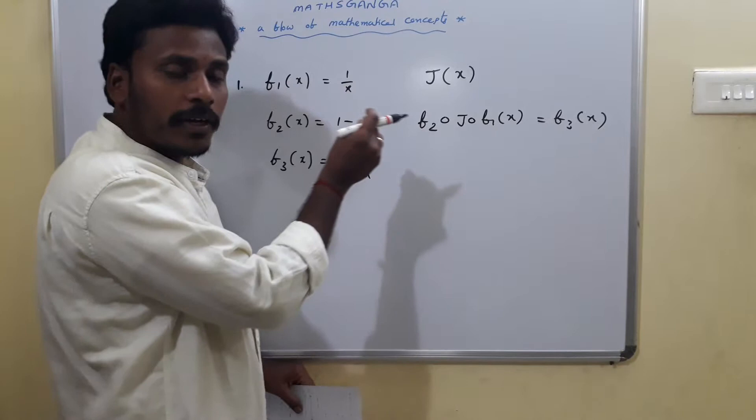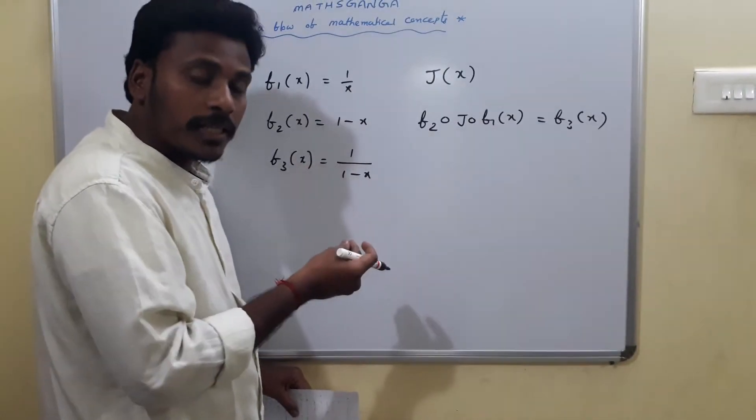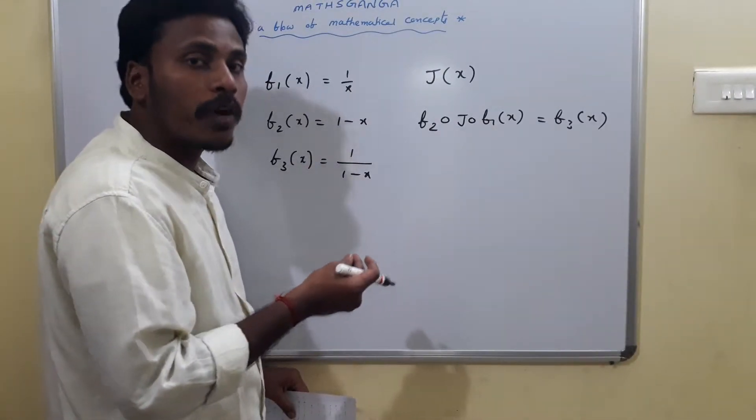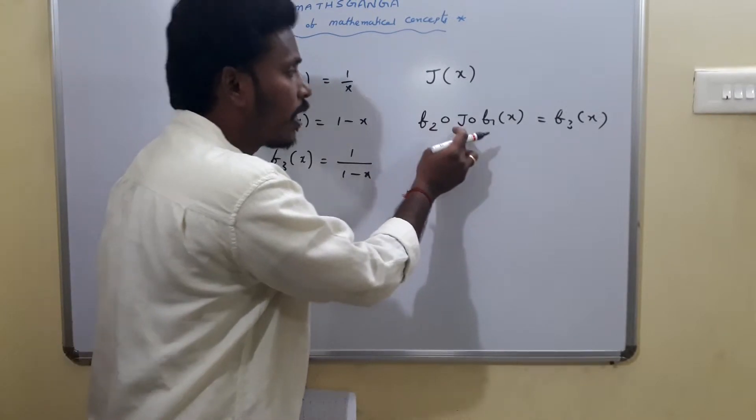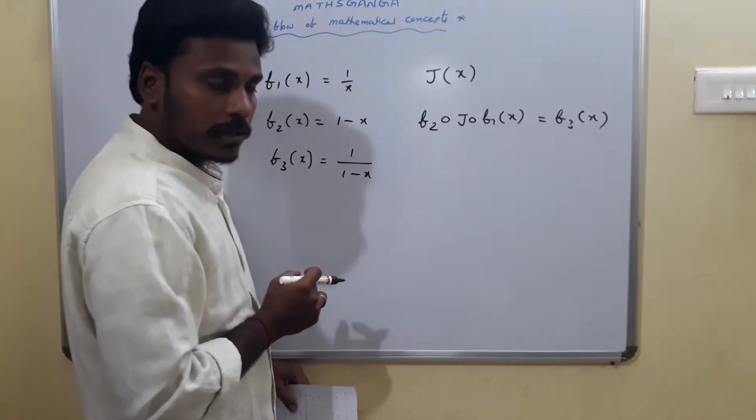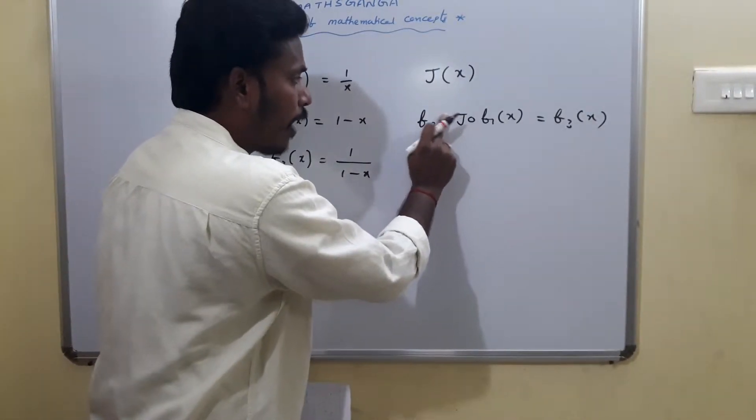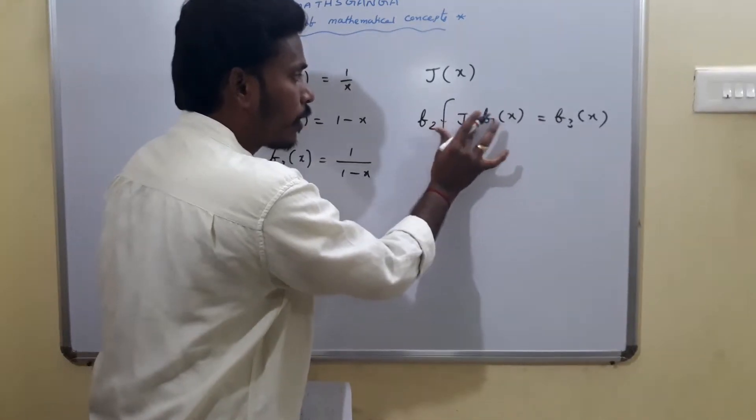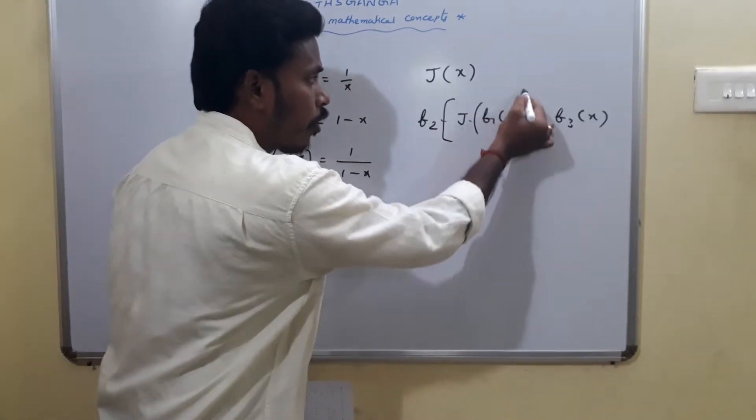To identify that, I am going to apply the concept of the composition of functions. F2 circle J circle F1 of x is nothing but F2 of J of F1 of x.